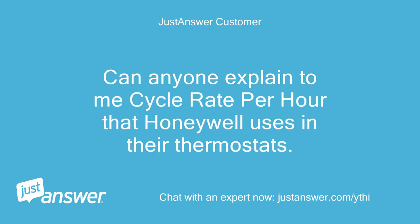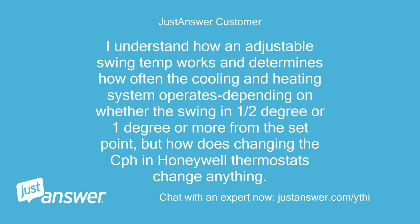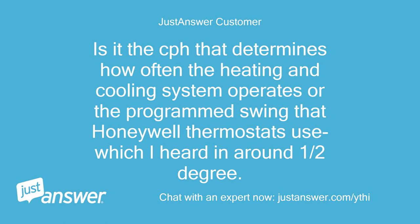Can anyone explain to me cycle rate per hour that Honeywell uses in their thermostats? I understand how an adjustable swing temp works and determines how often the cooling and heating system operates depending on whether the swing is a half degree or one degree or more from the set point. But how does changing the CPH in Honeywell thermostats change anything? Is it the CPH that determines how often the heating and cooling system operates, or the program swing that Honeywell thermostats use, which I heard is around a half degree?